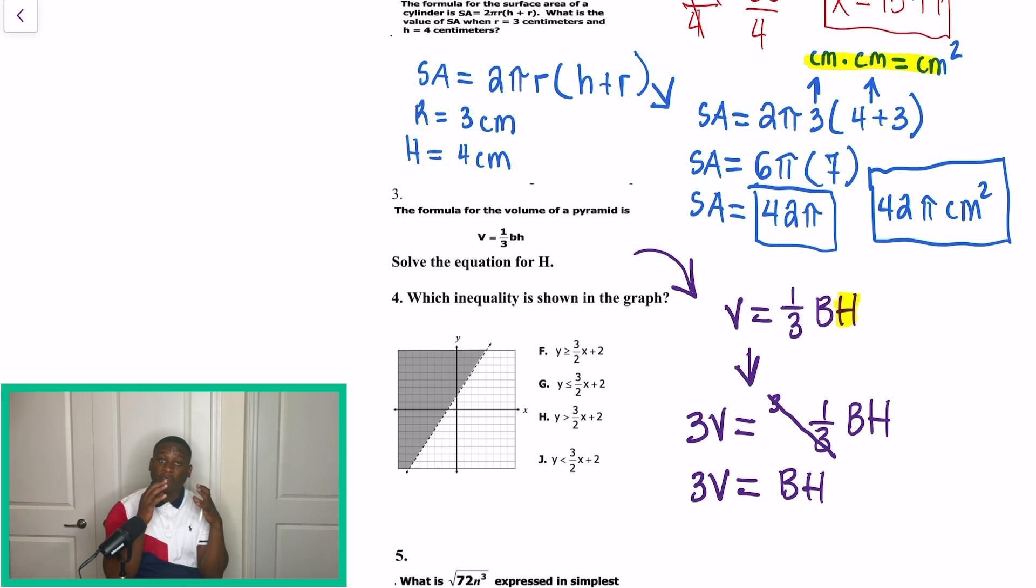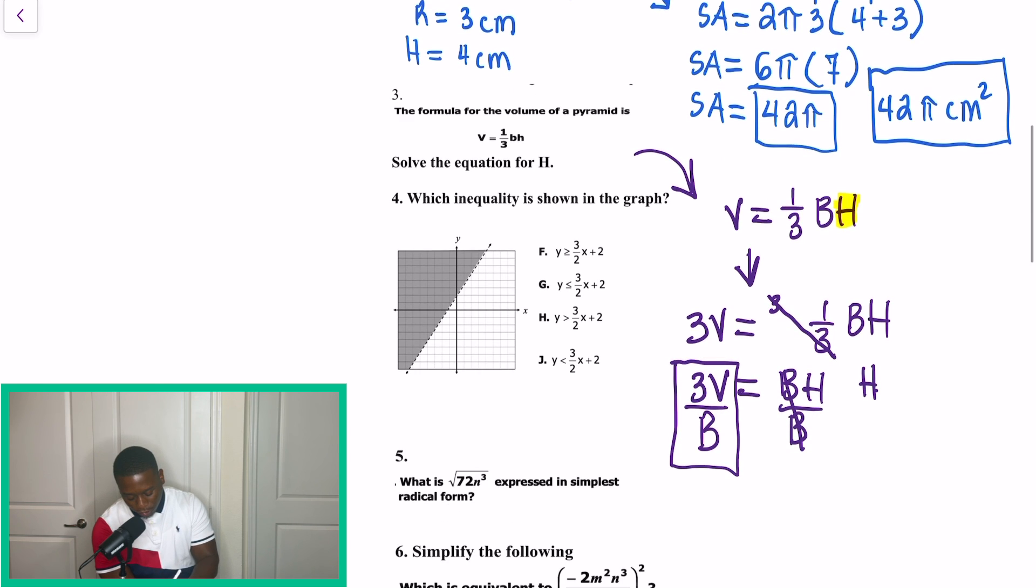So remember that B and H are, they're being multiplied together. So if I want to cancel that B out to get H by itself, I have to do the opposite of multiplication. So I'm going to divide by B, and our final answer is what I'm boxing off. H is equal to 3 times V divided by B.